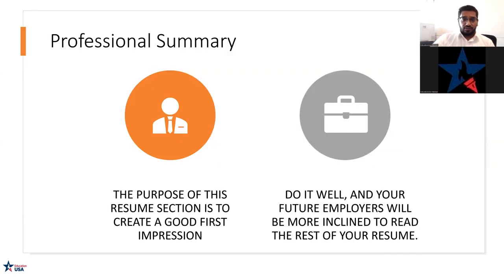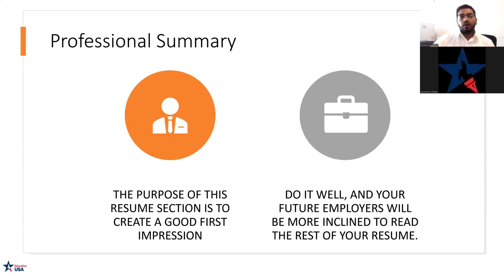Moving on to the professional summary section. A professional summary basically sums up your work experience, the skills you may have, and achievements into a short and concise sales pitch — you are the product and you're trying to sell yourself. You're going to condense your details, be consistent, and highlight your top qualifications. The admissions committee is going to review this because you're telling them who you are professionally. Make your adjustments based on which school and program you're applying for, and make your professional summary something unique about yourself — do not copy someone else's.